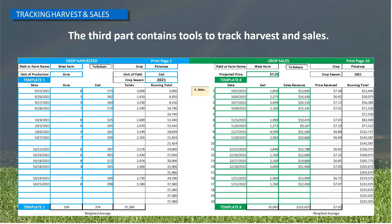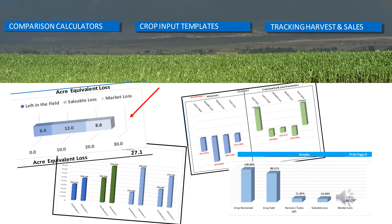The third part contains tools to track harvests and sales. The data yields analytics that you can go back and use in the comparison calculators. One particularly powerful graphic translates losses from crop left in the field, defects, spoilage, and storage shrink into an acre-equivalent loss — or whatever your unit of production is. It helps answer the question: should growers increase acres, or should they solve production problems and decrease acres?